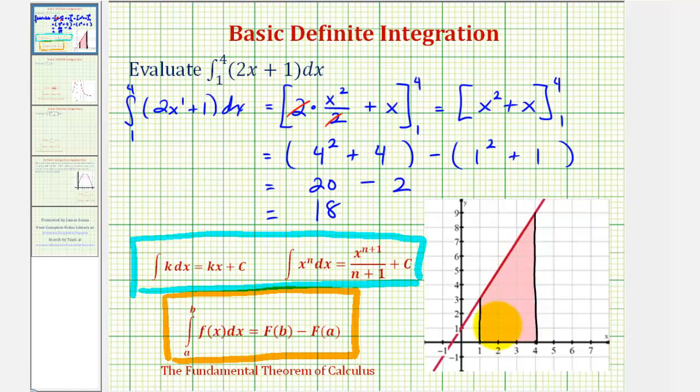Meaning, if we found the area of this trapezoid, it would be equal to 18, the same value as the definite integral.